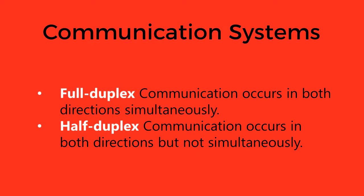A full duplex communication system allows communication in both directions simultaneously. Examples include telephone wires, mobile phones, and wireless connections.